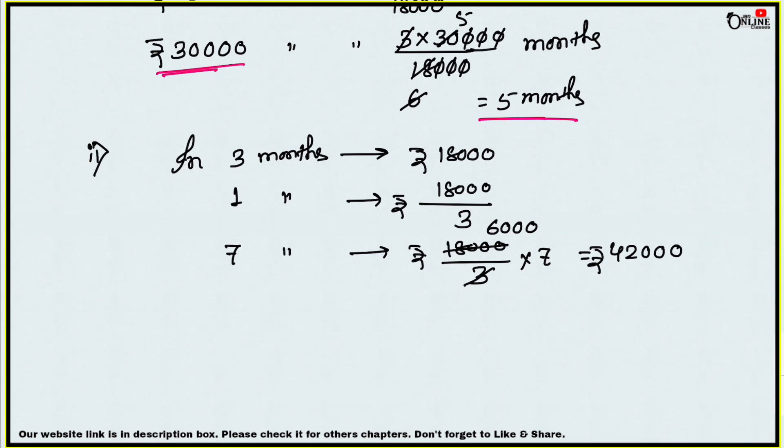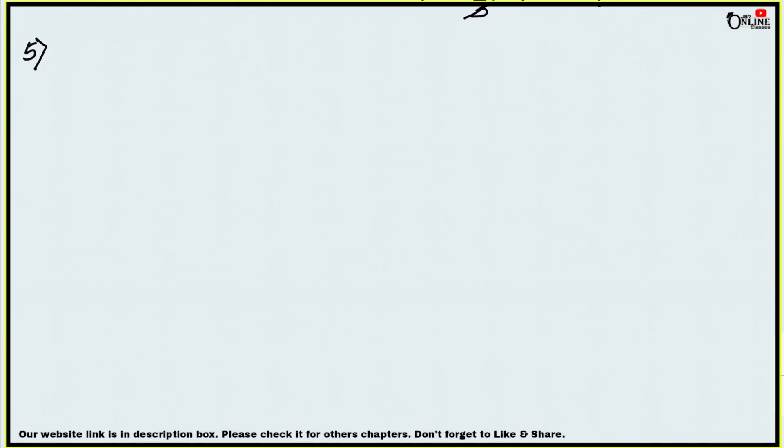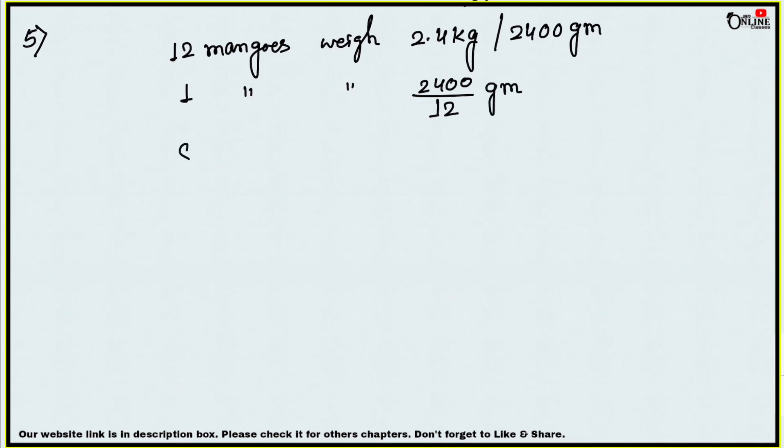Number five: 12 mangoes weigh 2.4 kg. What is the weight of eight mangoes? 12 mangoes weigh 2.4 kg or 2400 grams. One mango weighs 2400 by 12 grams. Eight mangoes weigh 2400 by 12 into 8 grams, which equals 1600 grams, that is equal to 1.6 kg.